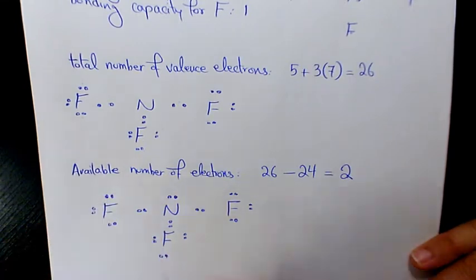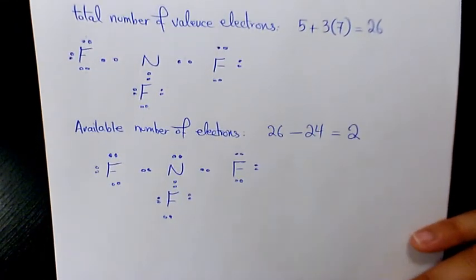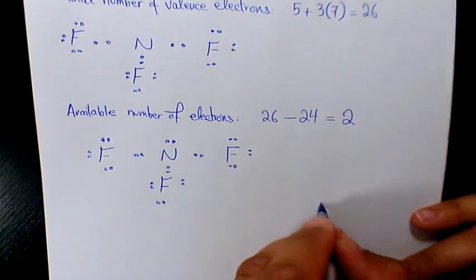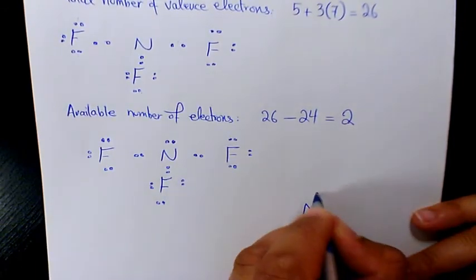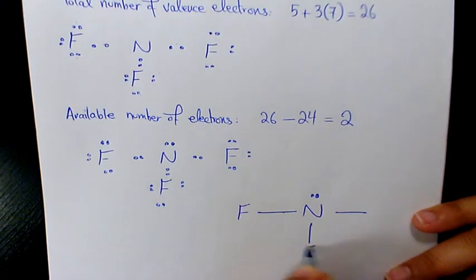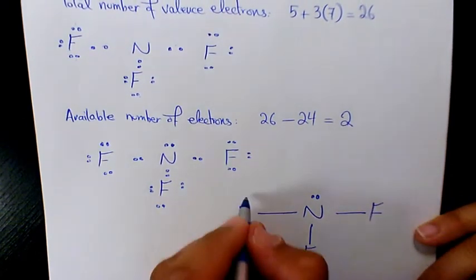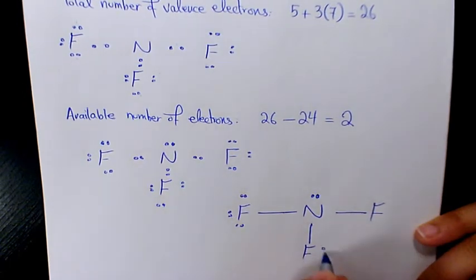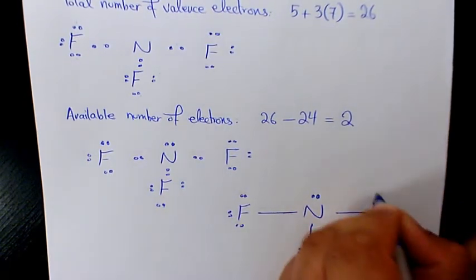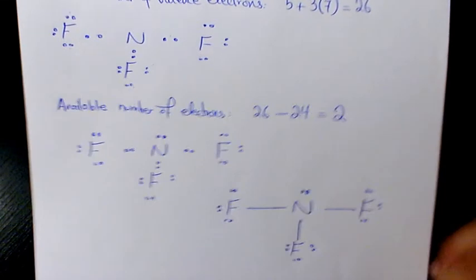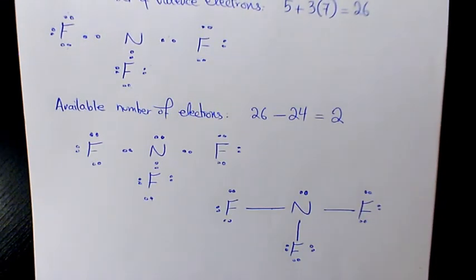At the end we replace shared electrons with dashes. So it's going to be N with a lone pair, with dashes to each F, and each F has lone pairs around it. That's the Lewis structure of nitrogen fluoride, NF₃.